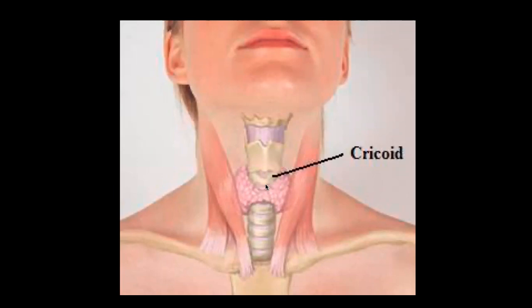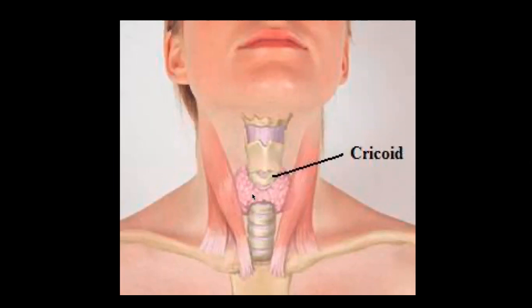Next in the midline is the cricothyroid membrane, which connects the thyroid cartilage to the cricoid cartilage. Then we have the cricoid cartilage, followed by the rings of the trachea. On the surface of the tracheal rings we find the thyroid gland — specifically, the first two rings are covered by the isthmus of the thyroid gland, the narrowest portion connecting the right and left lobes.